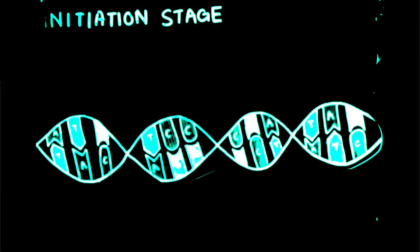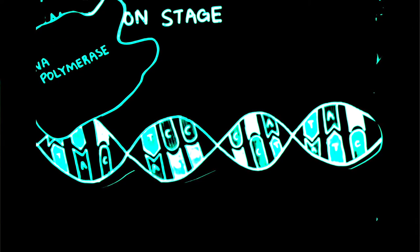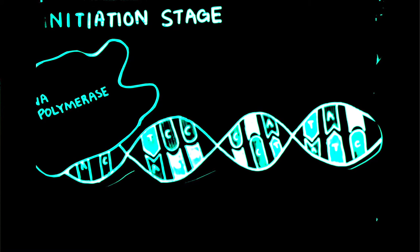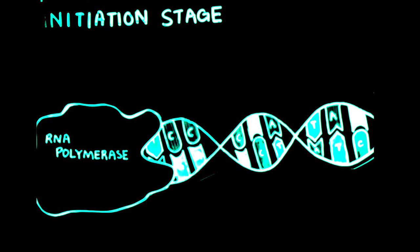During the initiation stage, the RNA polymerase uses the promoter region as a binding site. Binding results in the DNA double helix structure to unwind and open up.